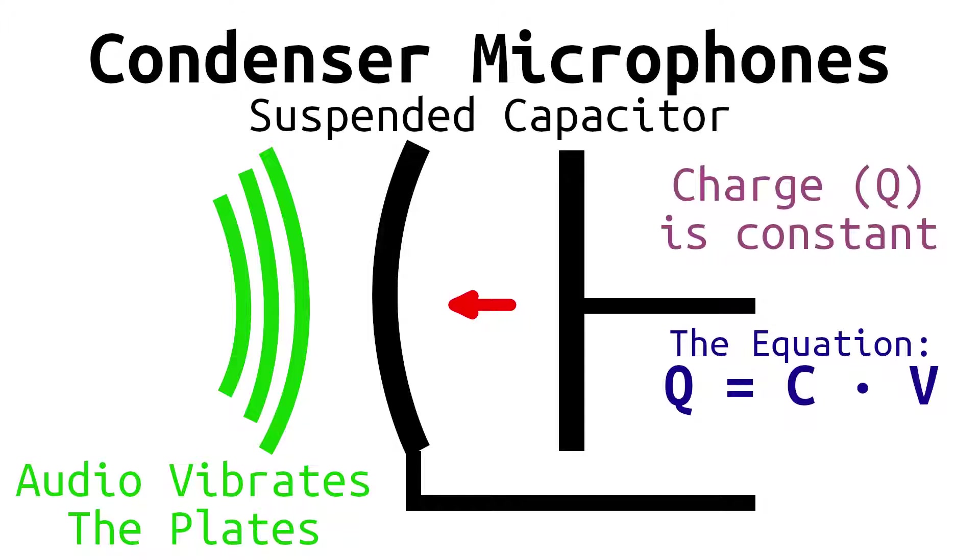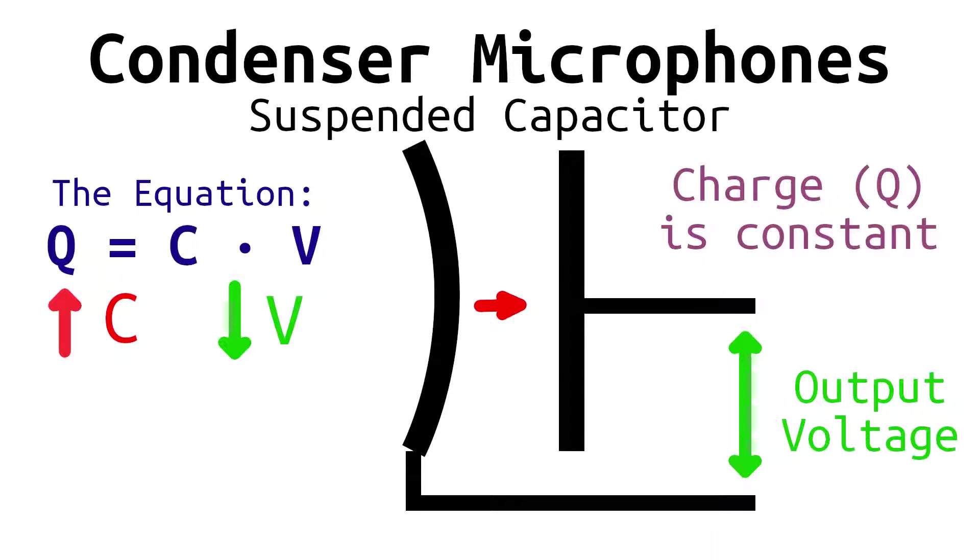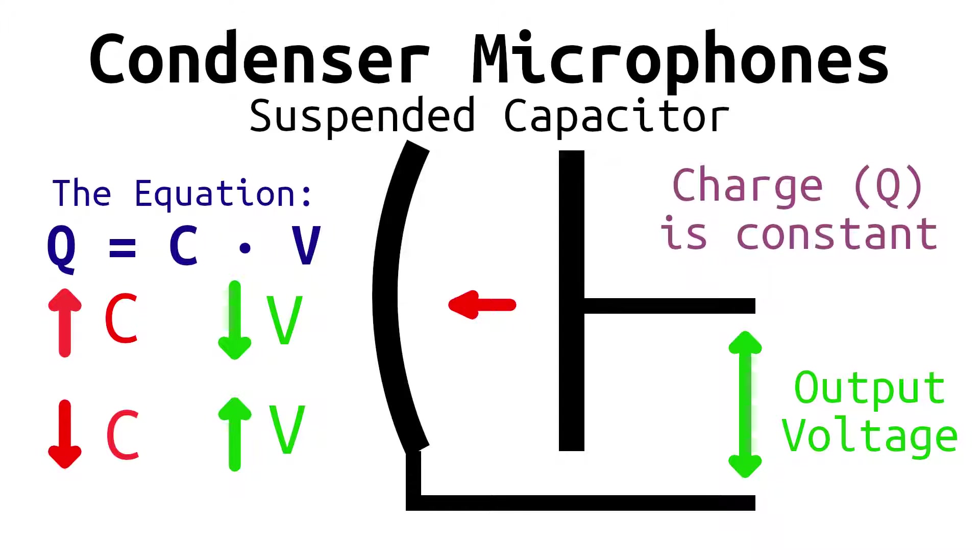Charge equals capacitance multiplied by voltage. The electret is permanently polarized, meaning that it has constant charge q. That leaves us with the changing capacitance and voltage. When the sound waves push the plates closer together, the capacitance increases. This forces the voltage to decrease in order to keep the charge constant. The inverse is also true. When the plates vibrate away, the capacitance decreases and the voltage increases. So we will get a voltage representation of our sound waves across the pins of the capsule.